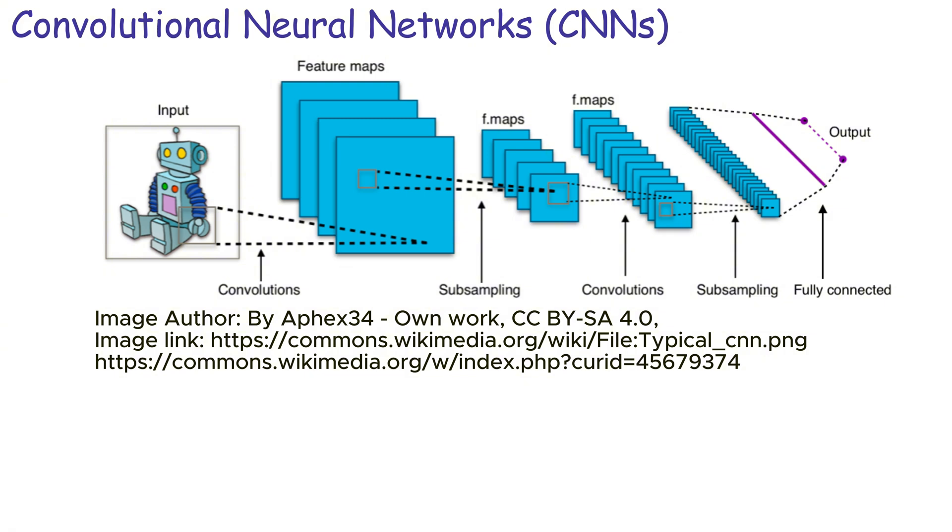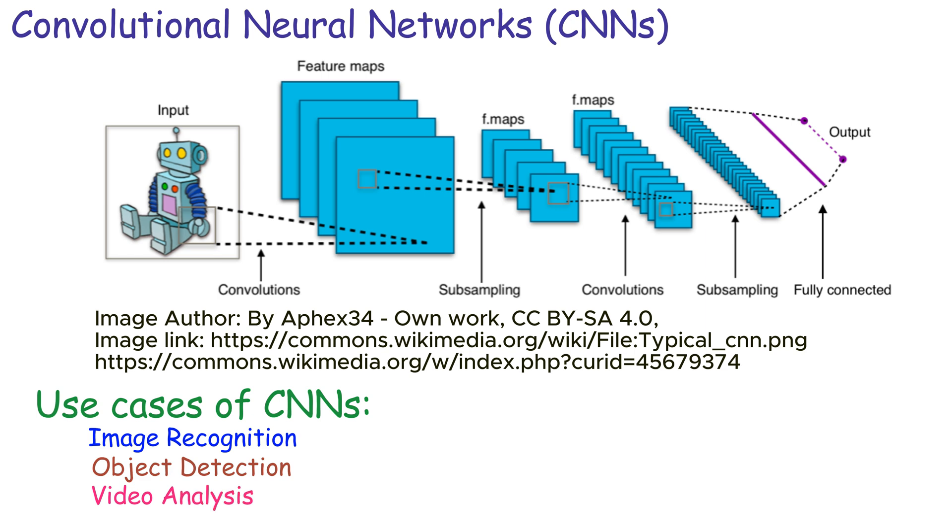Let us discuss some use cases. Image recognition: CNNs are the go-to architecture for image recognition and image classification tasks. Object detection: CNNs are used in object detection tasks where identifying and locating objects within an image is required. Video analysis: CNNs can be extended to analyze video data by processing frames sequentially or in parallel.